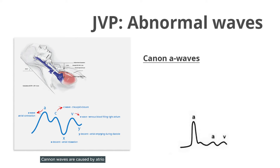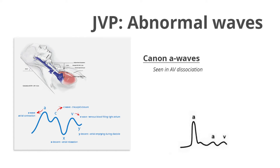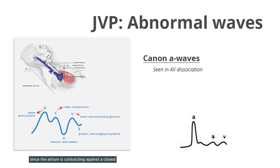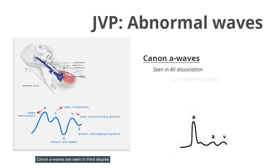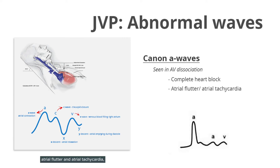Cannon waves are caused by atrioventricular dissociation, allowing the atria and ventricles to contract simultaneously. The resultant A wave is extraordinarily prominent since the atrium is contracting against a closed AV valve. Cannon A waves are seen in third degree or complete heart block, atrial flutter and atrial tachycardia, ventricular tachycardia, and ventricular ectopics.